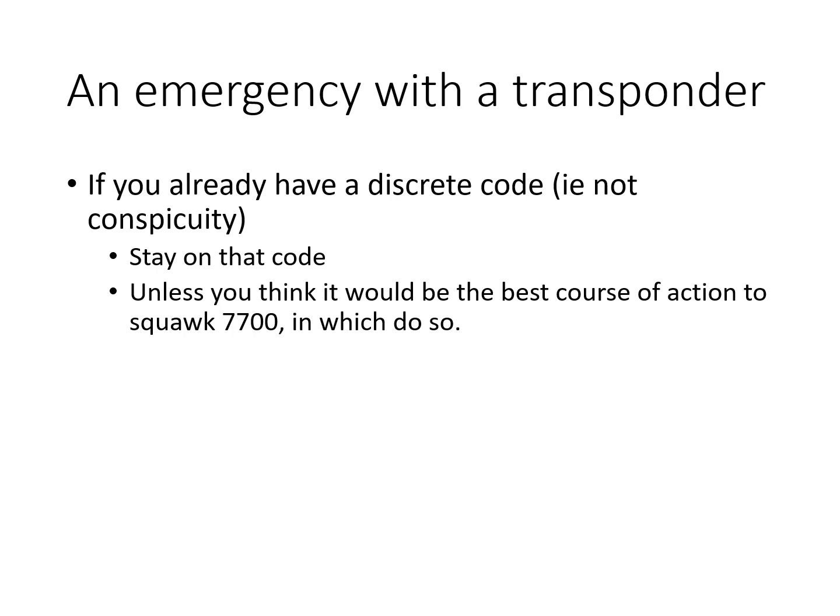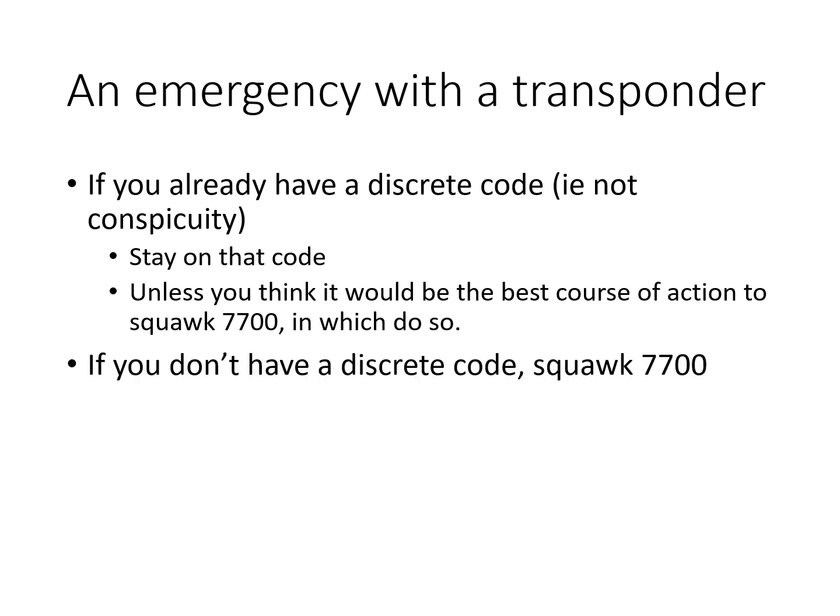If you have a transponder, how should you use it? If you already have a discrete code and are talking to a NATS unit, stay on it unless you're asked to change, or for some other reason you decide it would be better to squawk 7700. If you don't have a discrete code, then squawk 7700 to get people's attention.